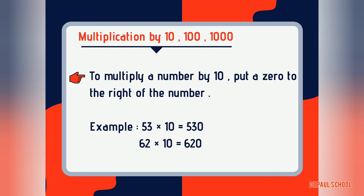Similarly, one more example: 62 multiplied by 10. We write 62 and put a zero to the right, so the answer is 620.